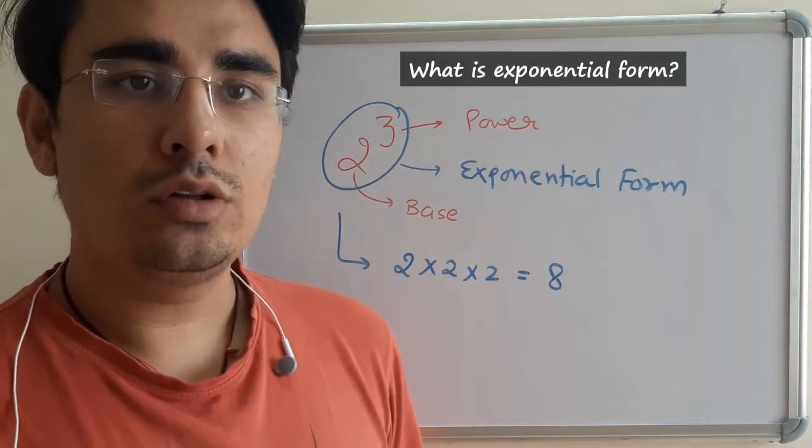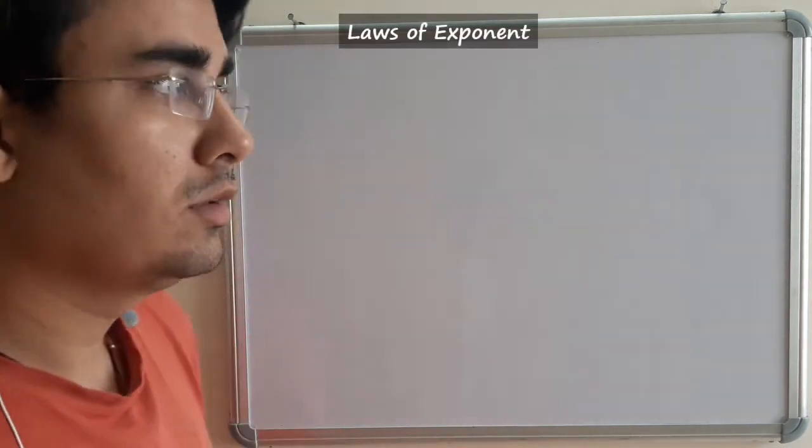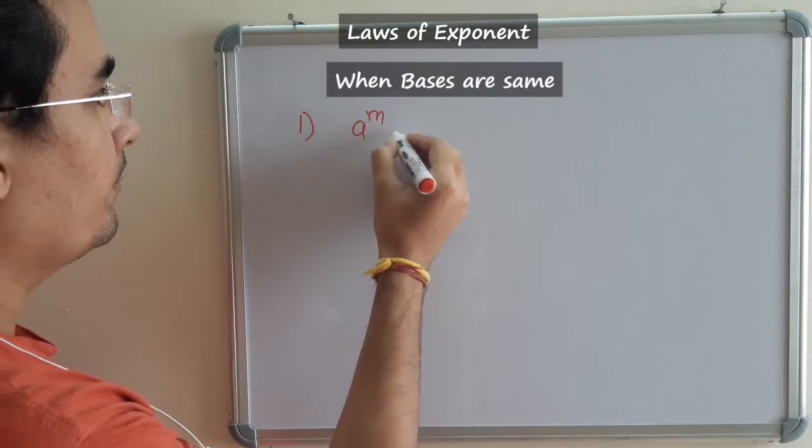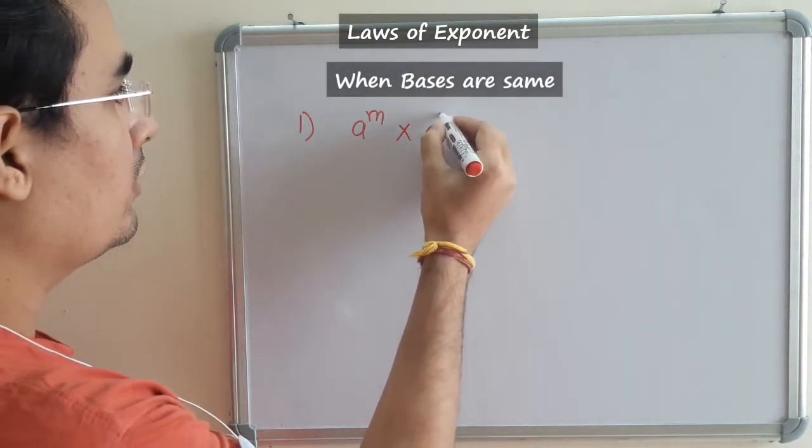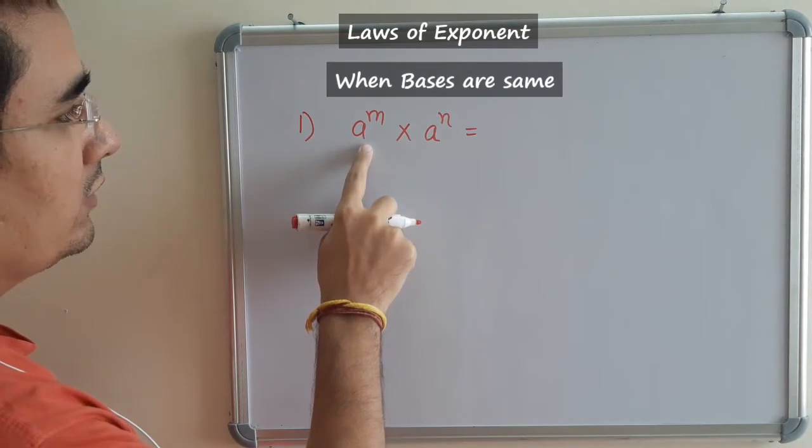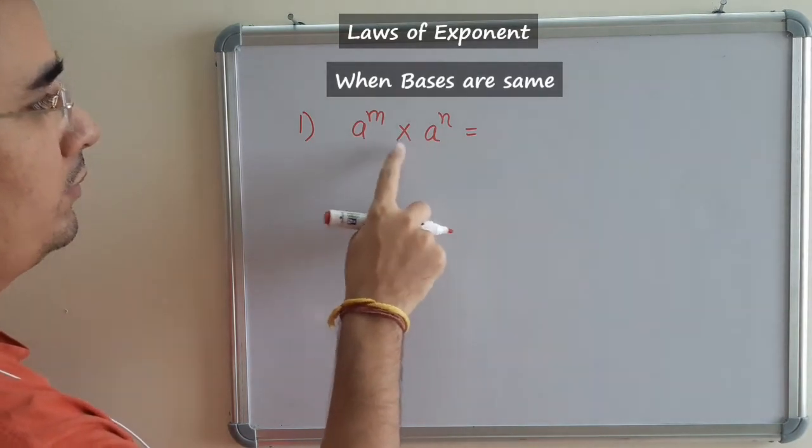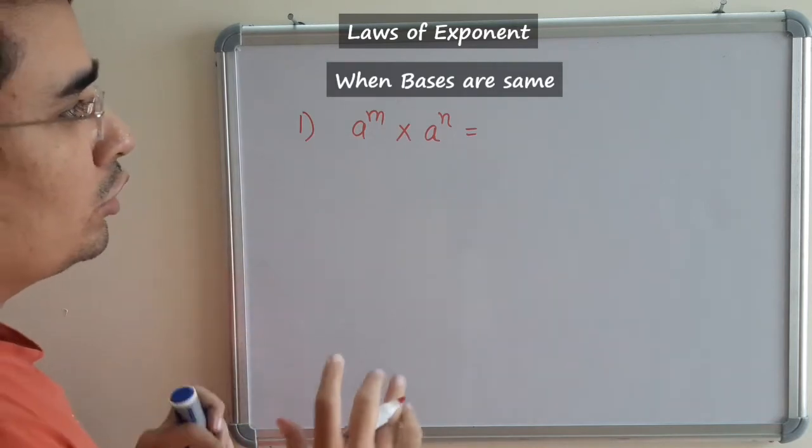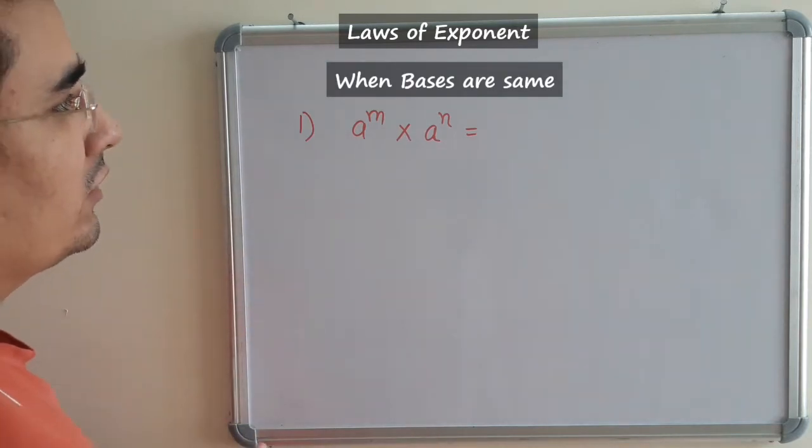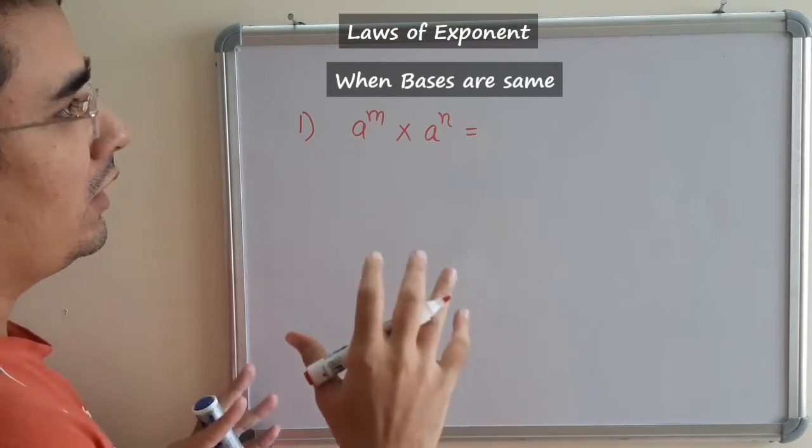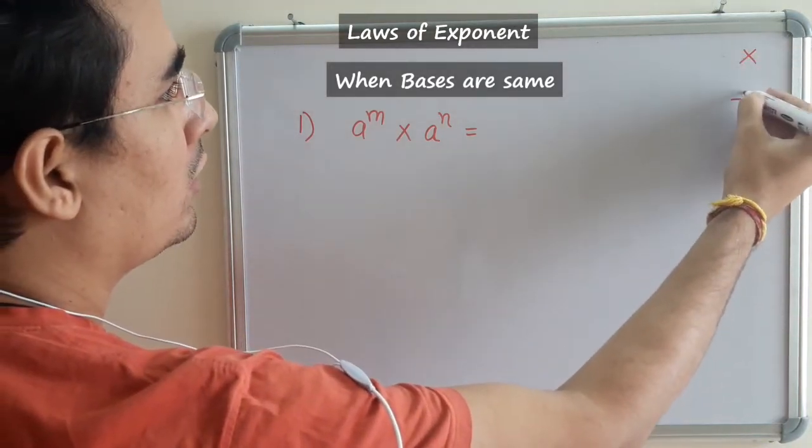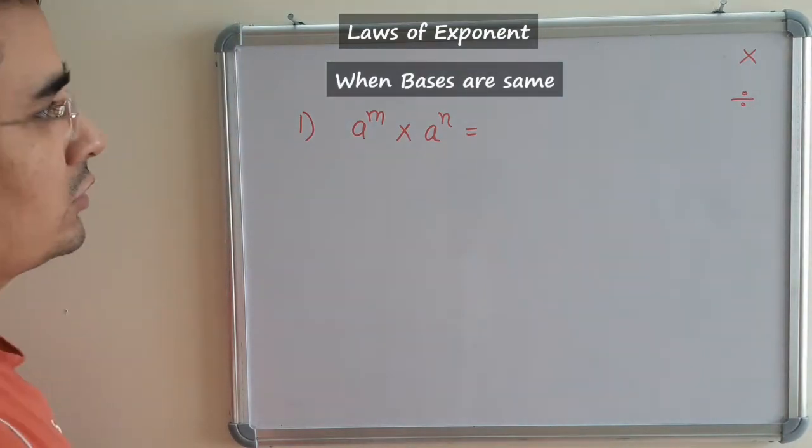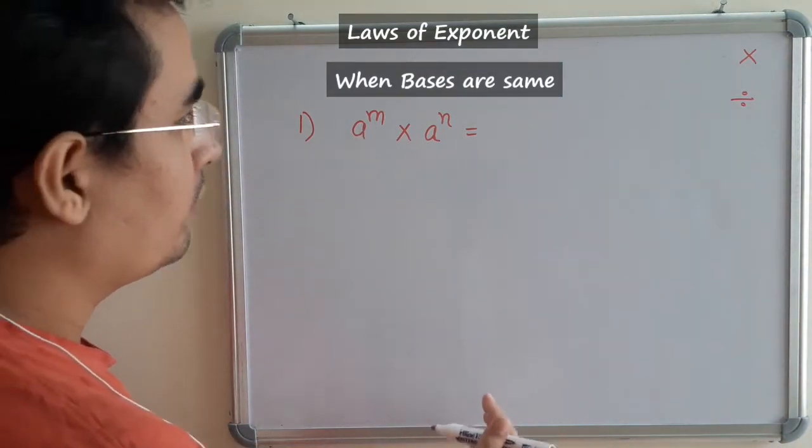Now let us focus on the laws. Our first law is the same base law: a^m times a^n equals. In both cases the base is same and powers are different. Laws of exponents work only in case of multiplication and division, not in addition or subtraction.